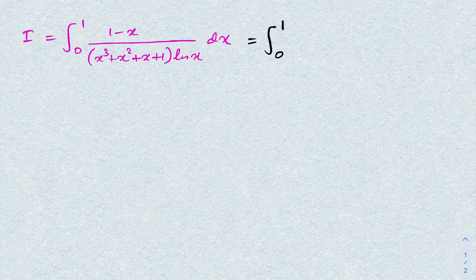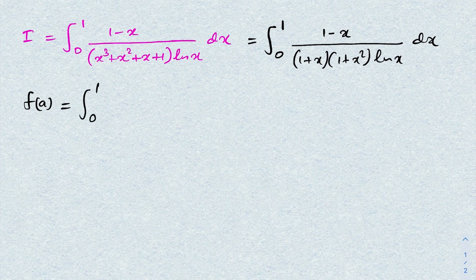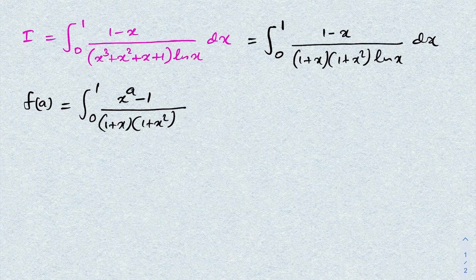First, in the denominator we can factor: x³ + x² + x + 1 = (1 + x)(1 + x²). So the integral becomes the integral from 0 to 1 of (1 minus x) over (1 + x)(1 + x²) times ln(x) dx. Now I'm going to define a function f(a) equal to the integral from 0 to 1 of x^(a−1) over (1 + x)(1 + x²) times ln(x) dx.